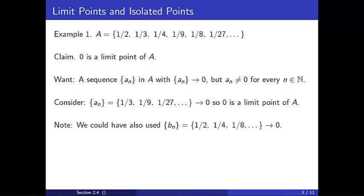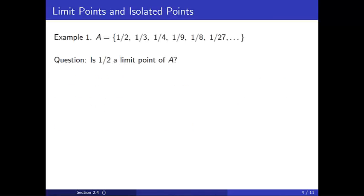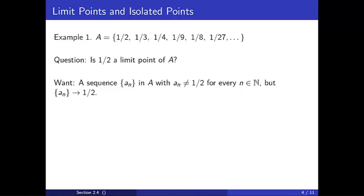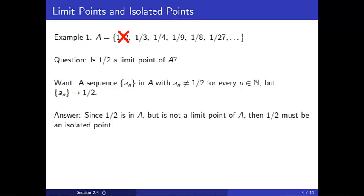Note we could have also chosen a different sequence from the elements of A — for example, 1/2, 1/4, 1/8, etc. would have worked just as well. Is 1/2 a limit point of A? Can we find a sequence of points in A, none of them equaling 1/2, converging to 1/2? No. If we eliminate 1/2, the remaining term closest to 1/2 is 1/3, so no sequence converging to 1/2 exists from these remaining terms in A. Since 1/2 is in A but is not a limit point of A, then 1/2 must be an isolated point.